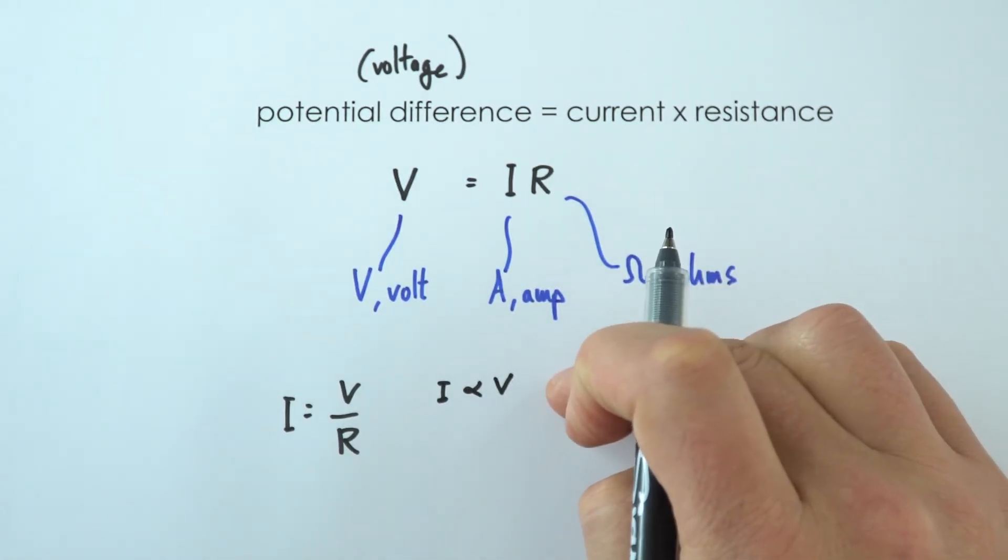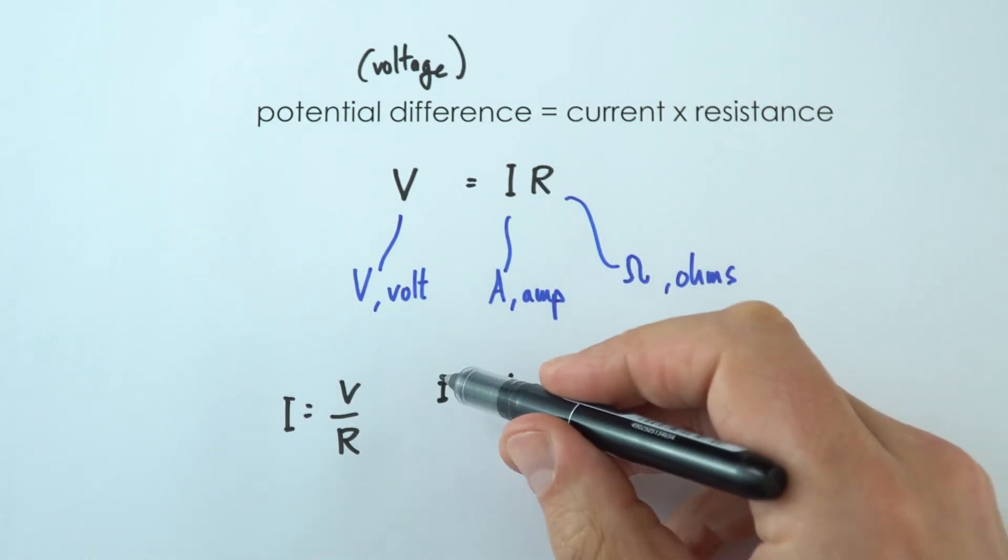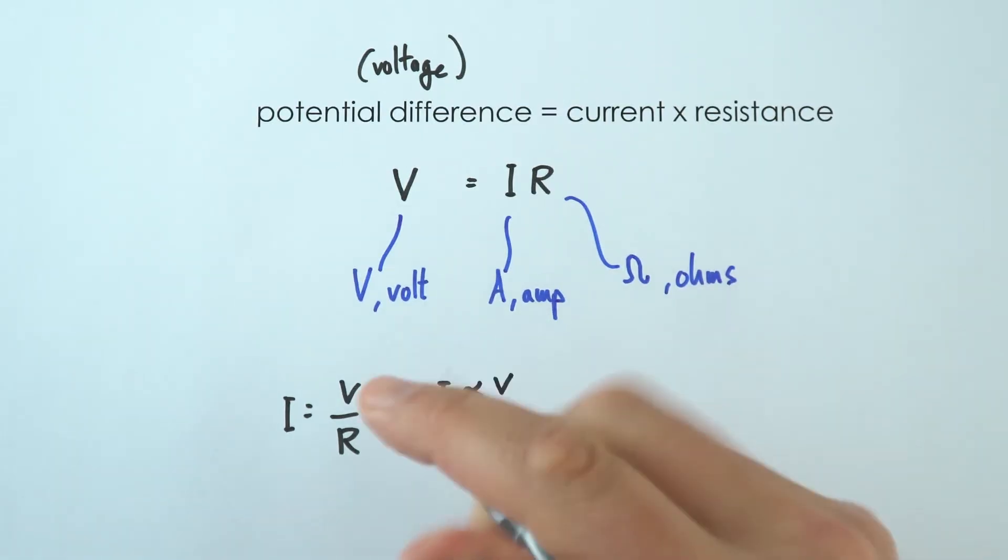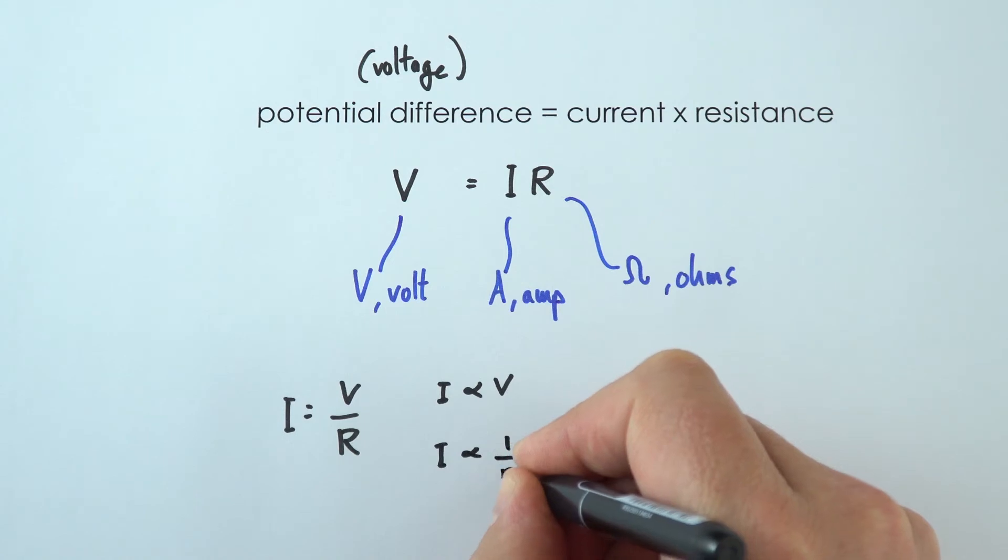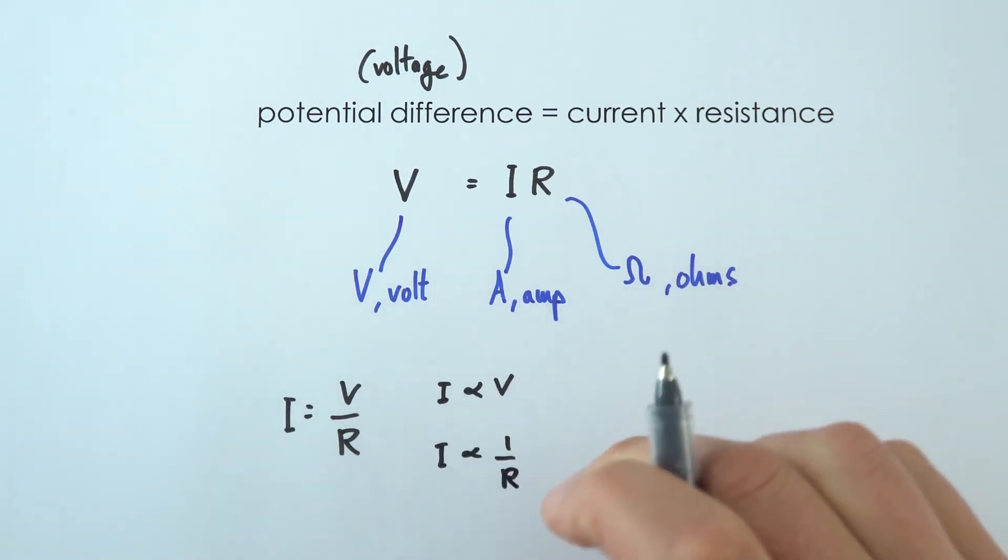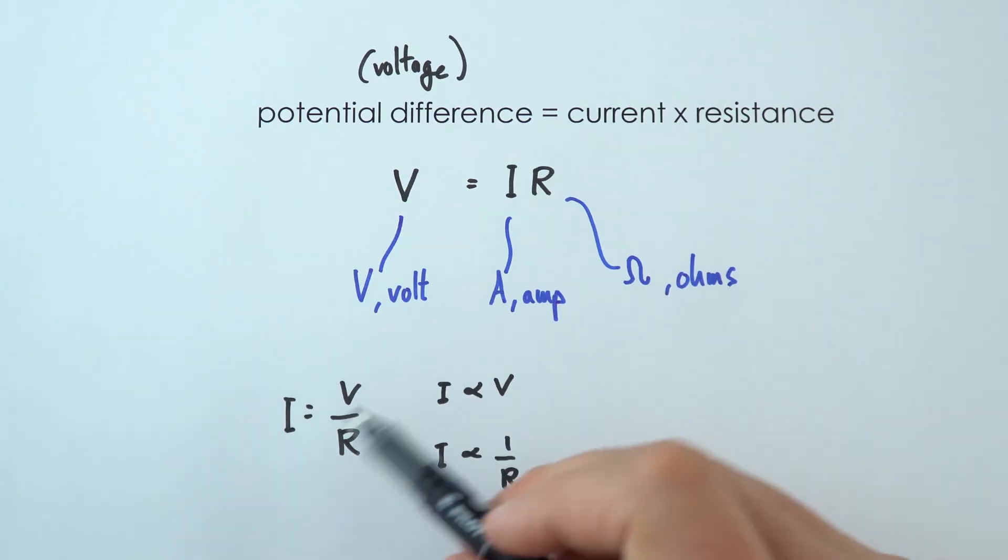Provided you had the same resistor in that circuit, you double the voltage, you're going to double the current. But also it means that I is proportional to 1 over R. What that means is, again maybe for the same value of potential difference, the bigger the resistor, the bigger the resistance of that circuit, the less current is going to be moving around it. So that's one really useful way of thinking about it.